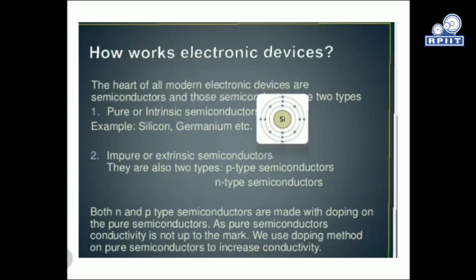The heart of all modern electronic devices are semiconductors, and semiconductor devices are of two types: pure semiconductors and impure semiconductors. Pure semiconductors are like silicon and germanium, while impure types are p-type and n-type semiconductors. P-type and n-type semiconductors are made through doping of pure semiconductors because the conductivity of pure semiconductors is not sufficient.